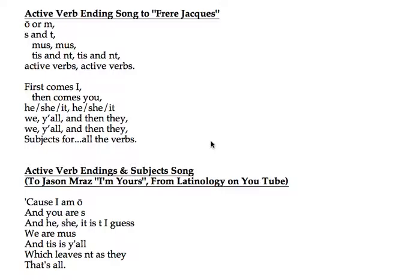First comes I, then comes you, he/she/it, he/she/it. We all and then they — we all and then they, subjects for all the verbs. So going in order, this is telling you that for the I ending you need O or M. O is used for present tense and also sometimes future. M is used for a lot of your other tenses like your imperfect or your pluperfect, things like that.